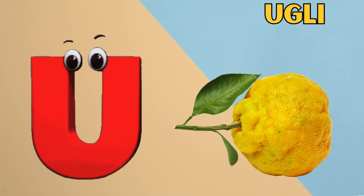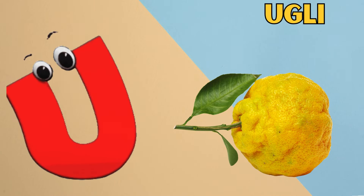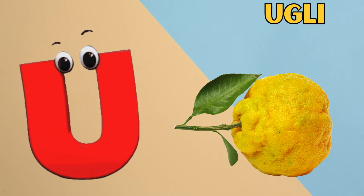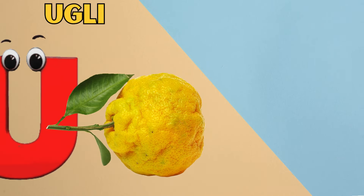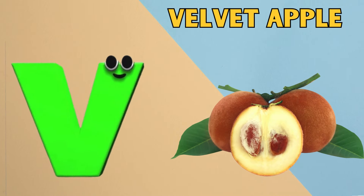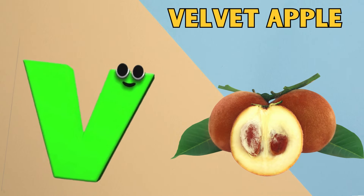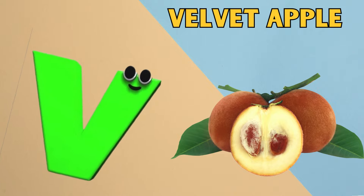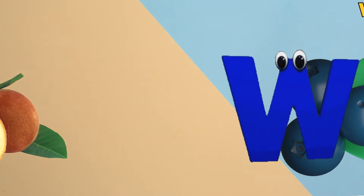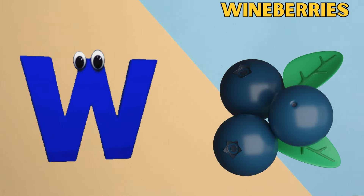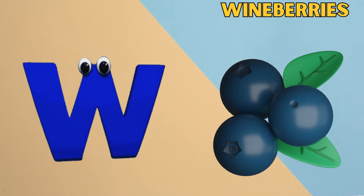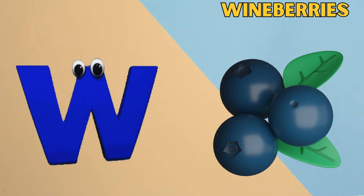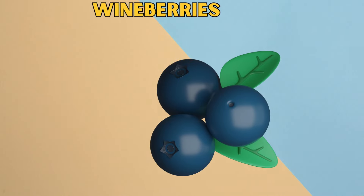U is for Ruvli. U, U, U. V is for Velvet Apple. V, V, Velvet Apple. W is for Wine Berries. W, W, Wine Berries.